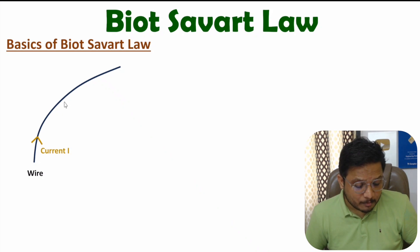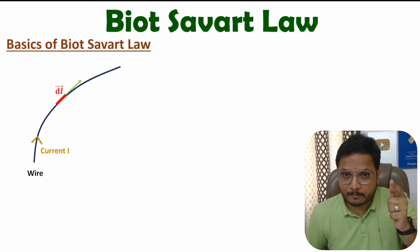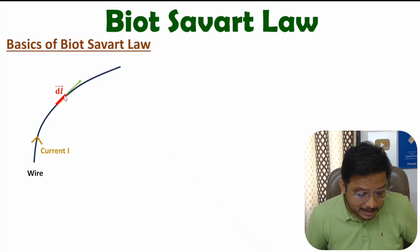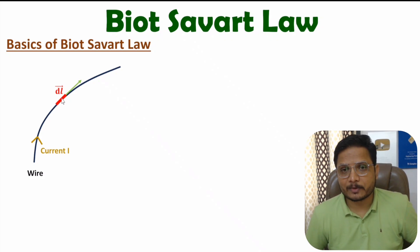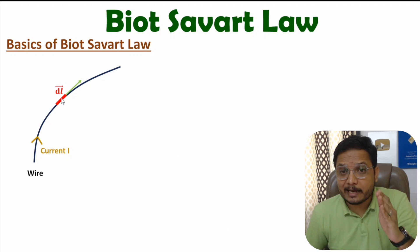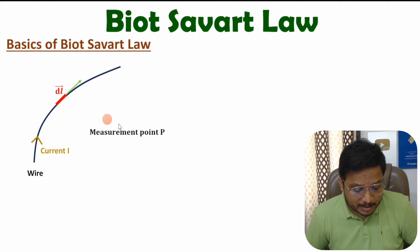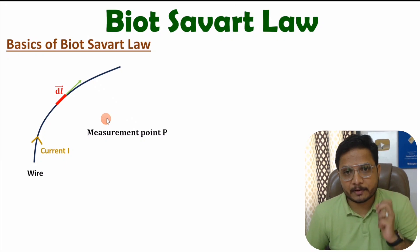Here, let us consider a small differential length dl. One should know this small differential length is having direction, and that direction is tangent to the curve. So here we have a curve of wire, and tangent to the curve is the direction of this small differential length dl. Due to small differential length dl, we will identify magnetic field intensity. Let us consider a measurement point P — at this location, we will identify magnetic field intensity.